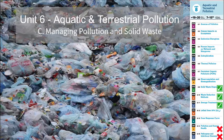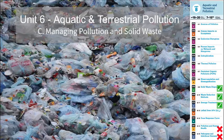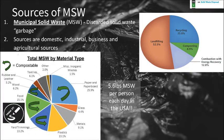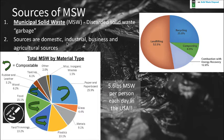Welcome back to our next set of notes, which is Unit 6: Aquatic and Terrestrial Pollution. In 6C, we'll be focusing on managing pollution of solid waste — solid waste disposal, waste reduction methods, and sewage treatment. To begin, we'll be looking at sources of MSW, which is municipal solid waste. This is all solid waste — stuff we typically refer to as garbage, excluding any liquids or gases. Sources include domestic, industrial, business, and agricultural sources.